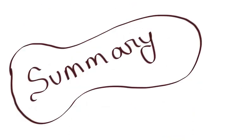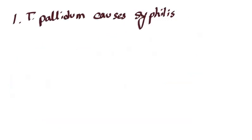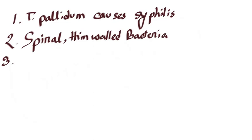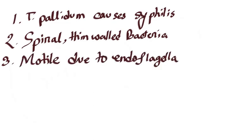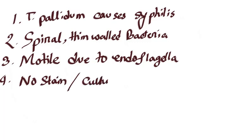To put it in a nutshell: Treponema pallidum causes syphilis. They are spiral thin-walled bacteria. They are motile as they have endoflagella. They cannot be stained by normal stains or cultured in normal media. They are treated by long-acting penicillin.